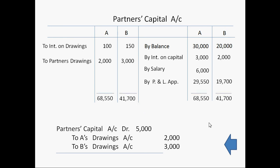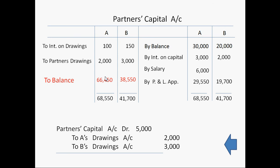Now we will compute the balance of partners' capital account. We will make total of the credit side, write the same total on the debit side, and subtract the total of the debit side to get the balance. A's capital account is showing a balance of Rs. 66,450 and B's capital account is showing a balance of Rs. 38,550. This is the updated balance of partners' capital account, and this updated balance we will show on the liability side of the balance sheet — with these updated figures: 66,450 and 38,550. This is all about the preparation of profit and loss appropriation account and partners' capital account.